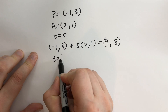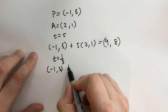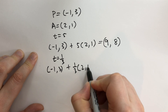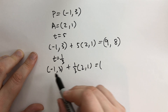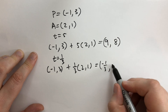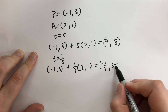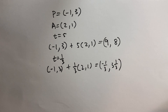If we set T equal to one third, we'd start at minus one, three and add one third of two comma one. We would get two thirds minus one, which is minus one third, and then three plus one third, so three and a third. That point also lies on the ray. You can go through all the points, T equals zero all the way up to whatever you want going to infinity, and you get all the points on that ray.